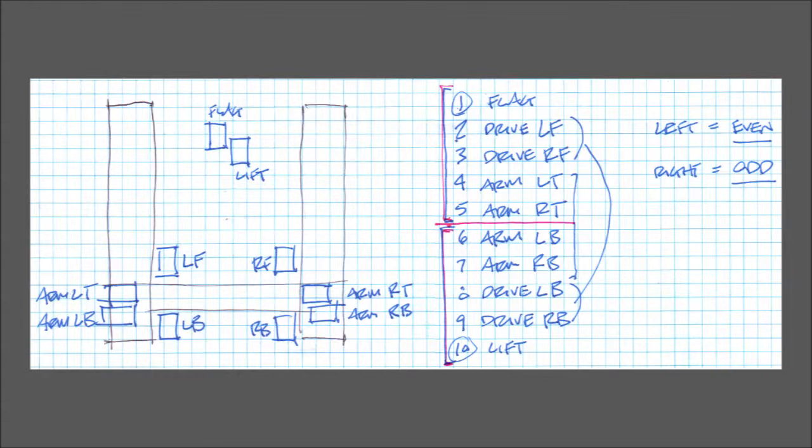You'll also notice the diagram is split 1 to 5 and 6 to 10. The cortex effectively has two circuit breakers and motors 1 through 5 are on one and 6 to 10 on the other. It's potentially useful to consider this when you're wiring your build to give yourself limited functionality in the rare case that one of the two circuit breakers fails. As you'll see, I've split the drive motors between the two sides and the arm motors between the two sides.